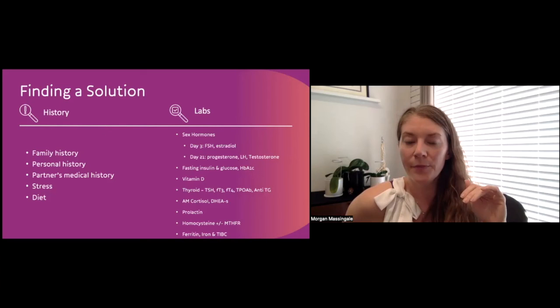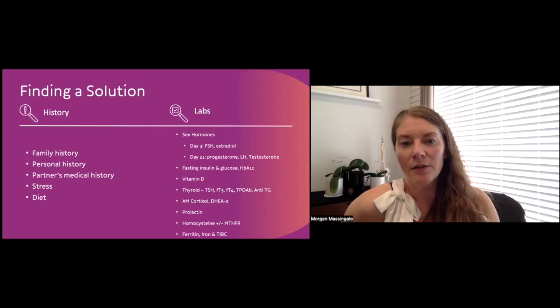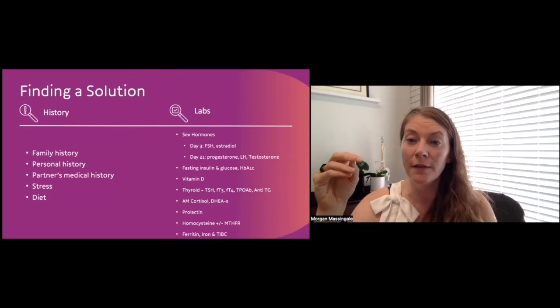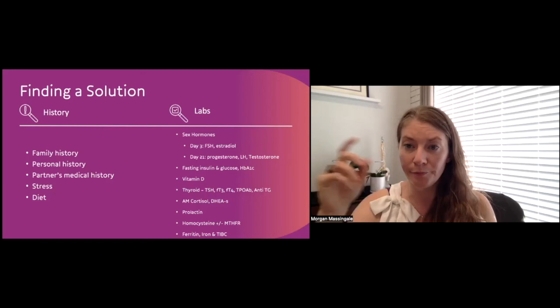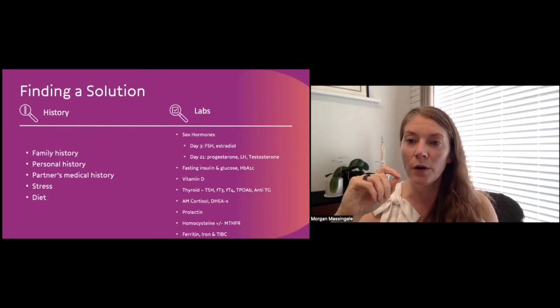The next thing on that list is a TPO antibody. And that is what tells us about Hashimoto's thyroiditis. That is that antibody that is specifically targeting the thyroid, creating that autoimmune condition. Also looking at antithyroglobulin, which is affecting again the immune system's response to your thyroid and your thyroid hormone.